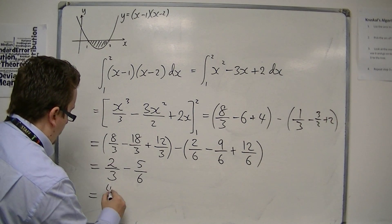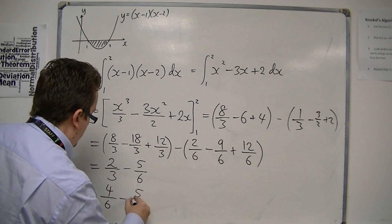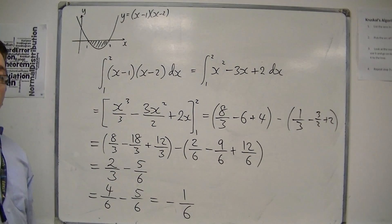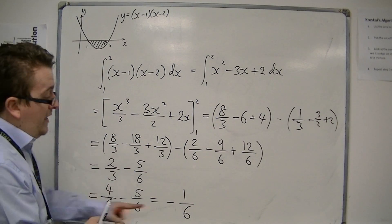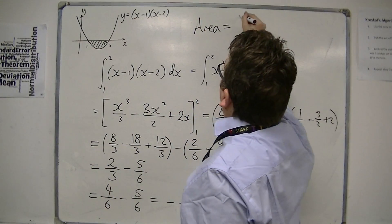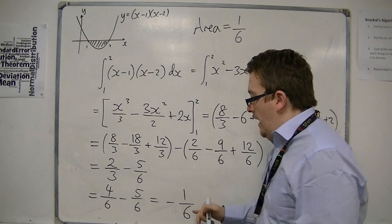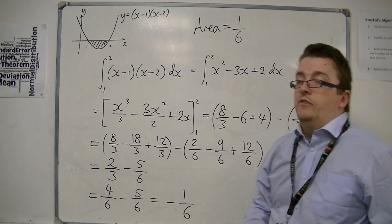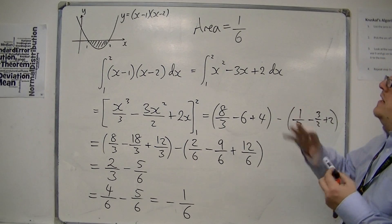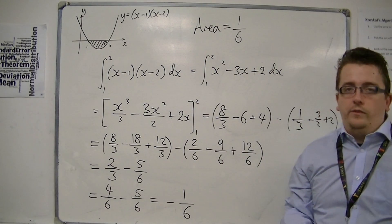So that's 4 sixths, take away 5 sixths, and so the area is, well, the integral, sorry, is minus 1 sixth. So that is the integral, so the area is 1 sixth, because the integral may be negative, but the area can't be. And that is how we can deal with a problem like this.